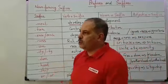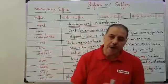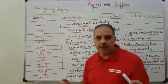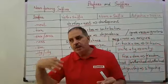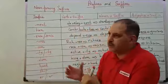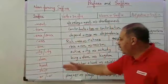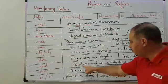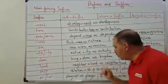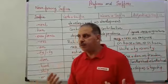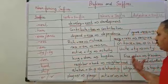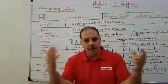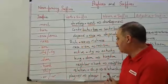The suffix '-hood' is used to form some particular nouns concerning a state or a period of time. For example, 'neighbor' plus '-hood' gives us 'neighborhood' — meaning 'al-jiwar' or the local area. Another example is 'brotherhood'.